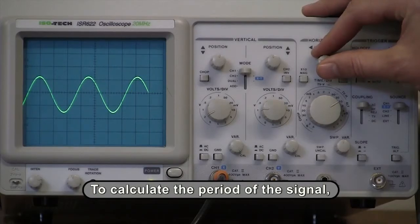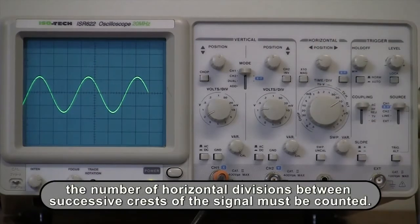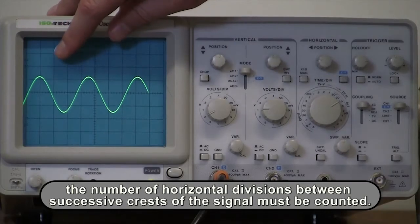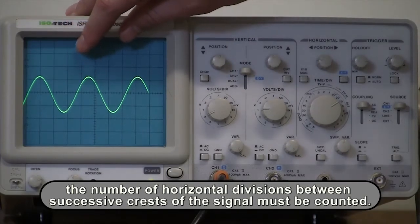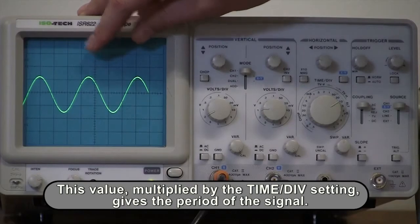To calculate the period of the signal, the number of horizontal divisions between successive crests of the signal must be counted. This number, multiplied by the time per division setting, gives the period of the signal.